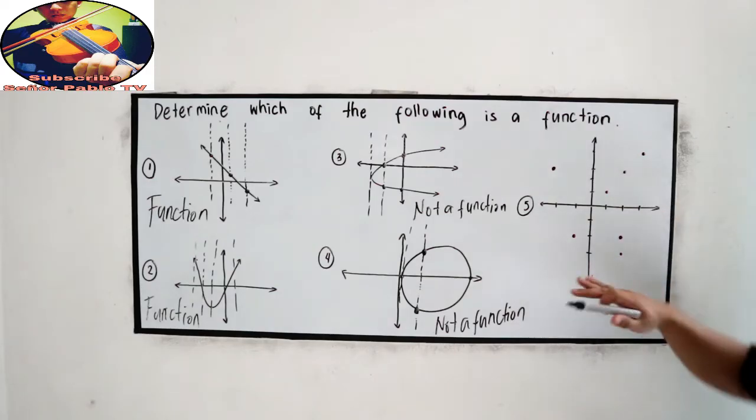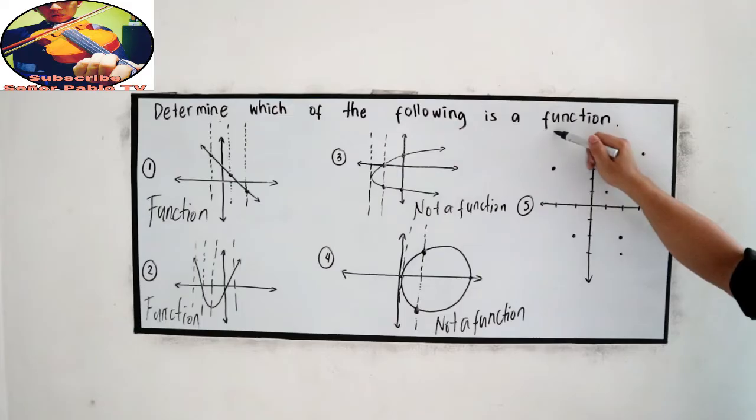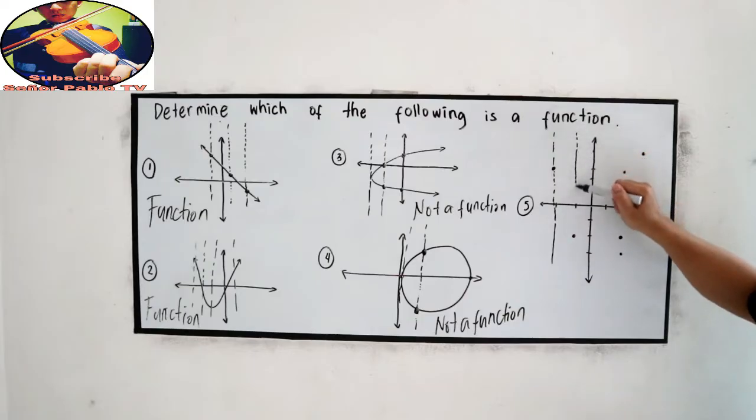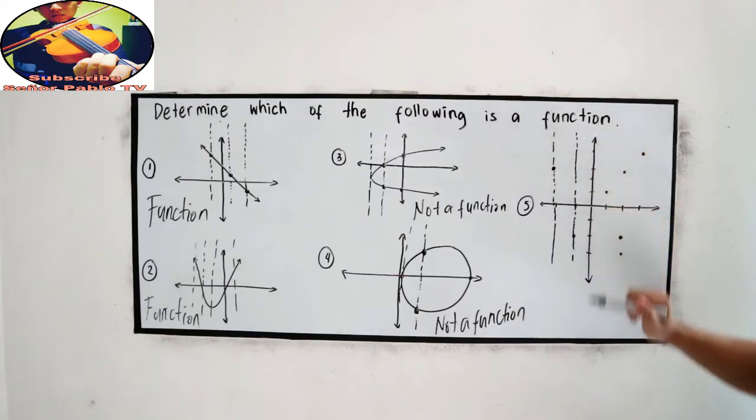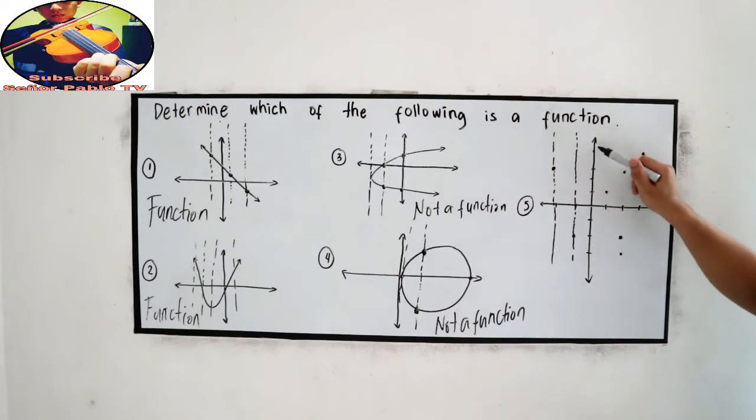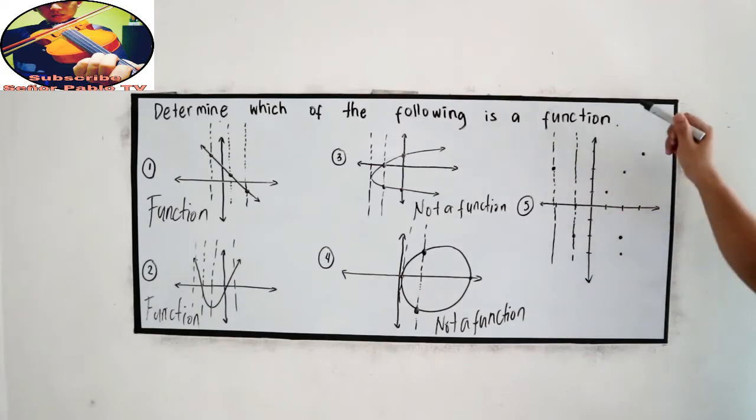And how about number five? So we have our first point, obviously only one point, the second point, okay. We don't have a point in our x-axis.